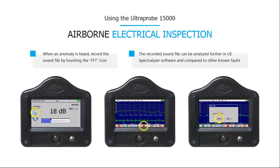You can change the sound file recording time in increments of five seconds up to 30 seconds, or leave it in the default manual setting which records automatically for one minute. Recording a sound file does two steps in one: it stores not only the sound file but also any photos taken, plus the decibel level, and links it all together before advancing to the next point.